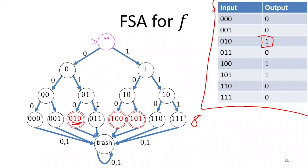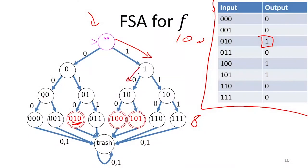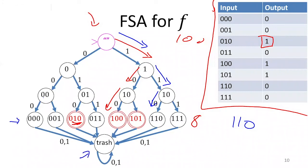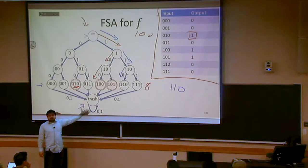Once I've set up the states and final states, the transitions through this finite state automaton navigate to the correct output. For example, if my input is 1, 0, 0, the automaton transitions right on 1, left on 0, left on 0, ending in a final state and returning 1. If the input is 1, 1, 0, it goes right on 1, right on 1, left on 0, ending in a non-final state and returning 0. There are also extra states for paths through the tree, and a trash state for inputs that are too long.